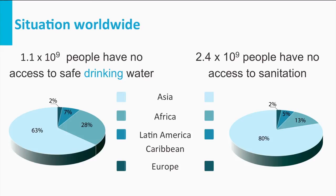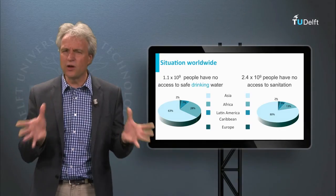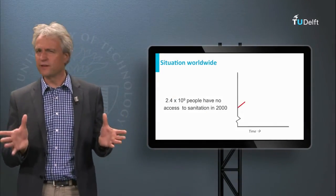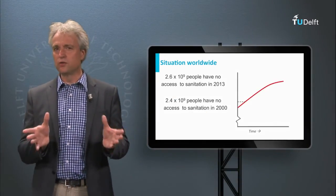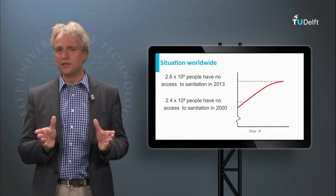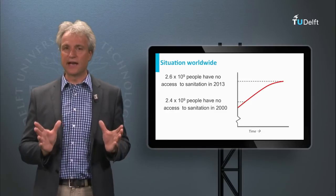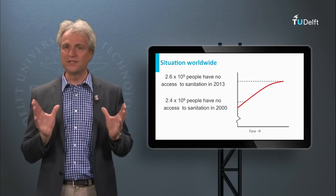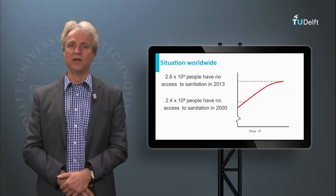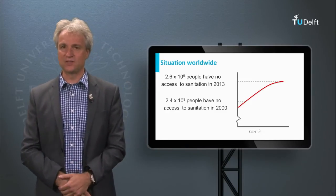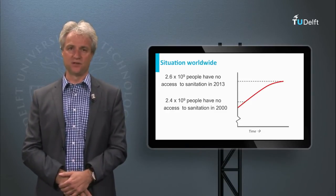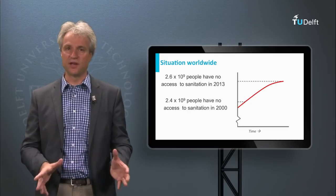But were these MDG agreements effective? Well, no. In fact, with regard to sanitation, the situation aggravated, and now some 2.6 billion people have no access to proper sanitation. A shame.